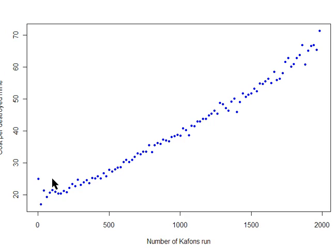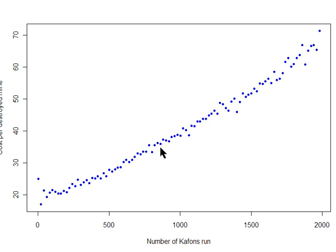He estimated a cost per kafan of 40 euros, or about 50 dollars. And because each one can be used to destroy more than one mine, if you're just sending a few kafans into the minefield, you end up with, say, a $20 per mine destroyed cost — but that continues to increase as you go along.